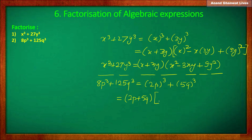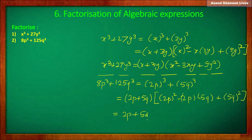That is: square of 2p minus 2p into 5q plus the square of 5q. So it is equal to (2p plus 5q) into another bracket: square of 2p is 4p squared, minus 2p into 5q that is 10pq, plus the square of 5q that is 25q squared. So these are the factors of 8p cube plus 125q cube.